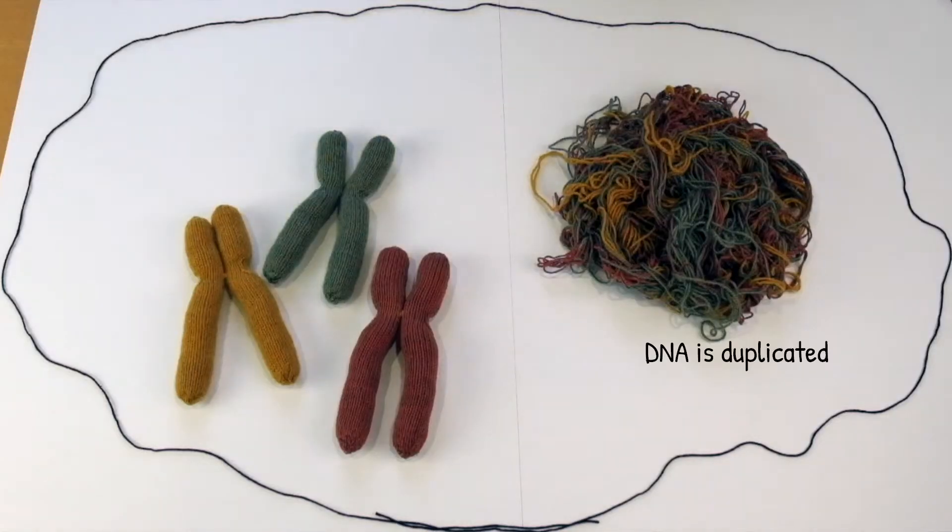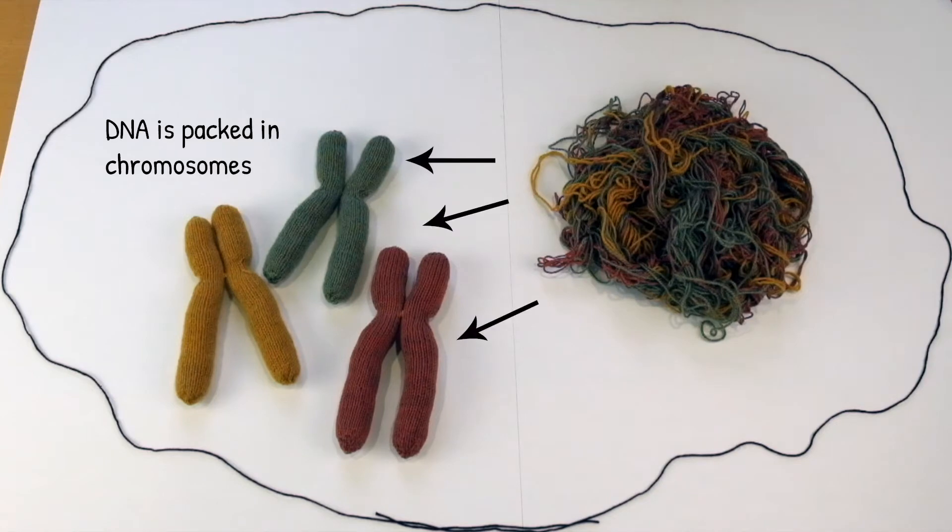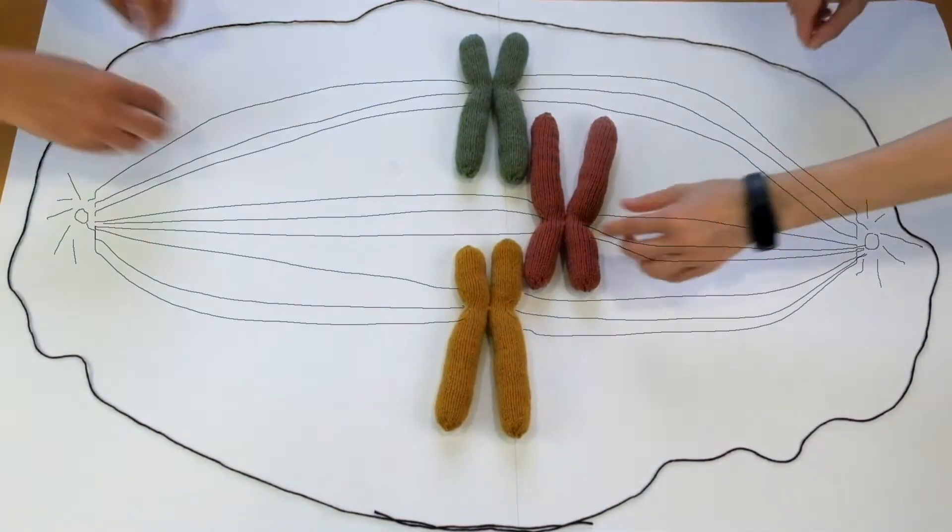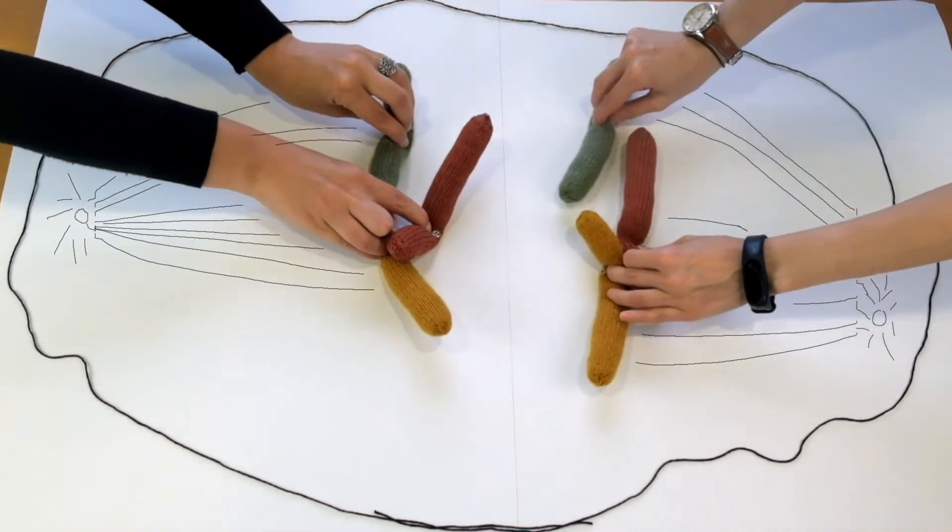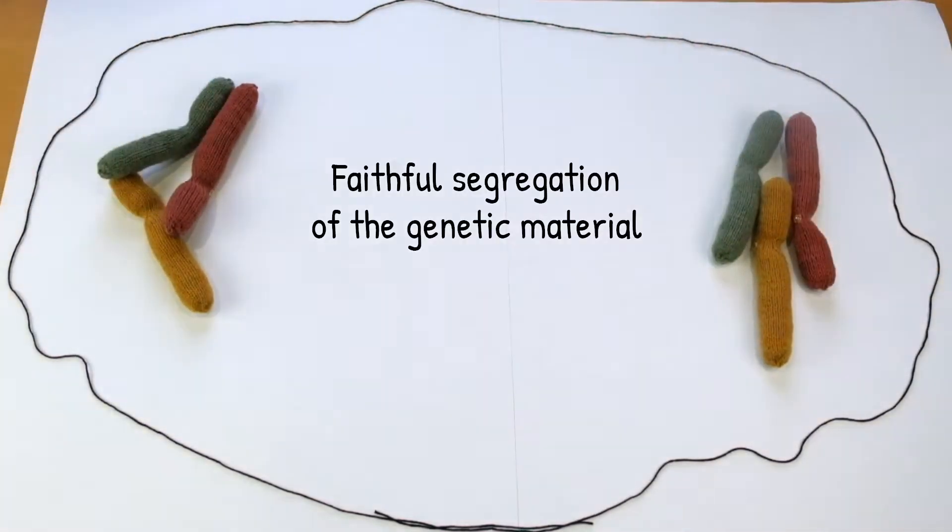During cell division, DNA is duplicated and packed in chromosomes, and this process is absolutely required for faithful segregation of the genetic material into two daughter cells.